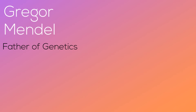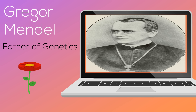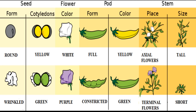Gregor Mendel is considered the father of genetics. He was famous for studying pea plants. As he studied the plants, he noticed that for different characteristics like seed shape, there would be different forms. These characteristics became known as traits.